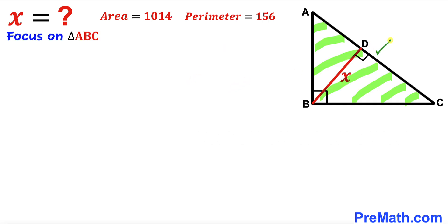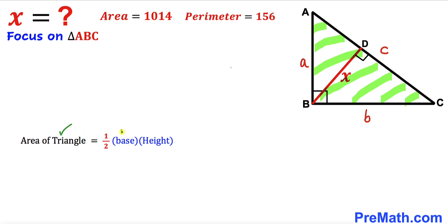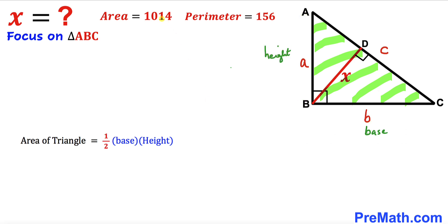Let's focus on the big right triangle ABC and label its side lengths. I am going to call side length AB as lowercase a, side length BC as lowercase b, and side length AC as lowercase c. Now let's recall the area of a triangle formula: Area equals one-half times base times height. For triangle ABC, side a is our base and side b is our height, and our area has been given as 1014.